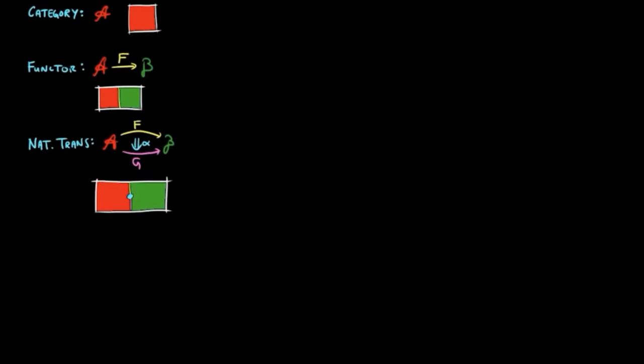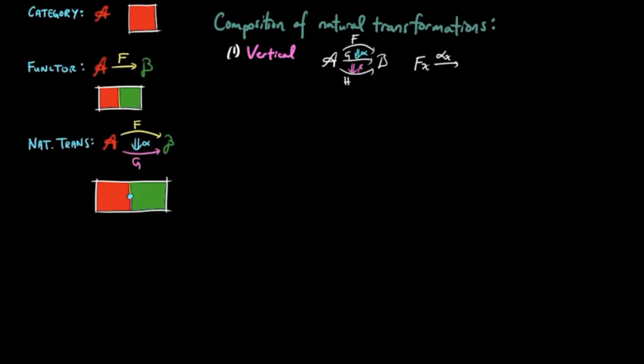We recall that there are two types of composition of natural transformations. The first is vertical, where alpha followed by beta is defined on component x by composition of alpha x followed by beta x in the category B. In string diagrams, this is just alpha above beta.